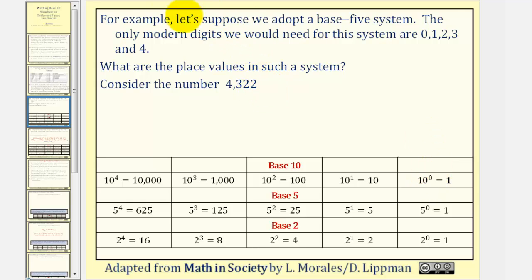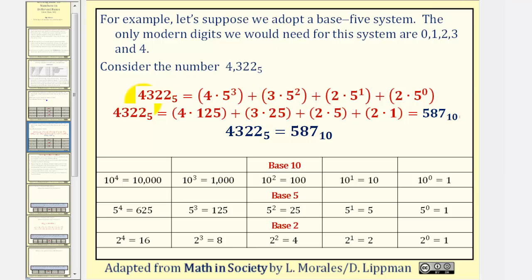But if we change this to base 5, now the 4 represents 4 times 5 to the third, or 4 times 125. The 3 indicates 3 times 5 to the second, or 25's. This 2 means 2 times 5 to the first, or 2 fives. And this 2 means 2 ones. So if we wanted to determine the value of this number in base 10, we multiply each digit by its place value. If we simplify, we get 587 in base 10. So 4322 in base 5 is equal to 587 in base 10.